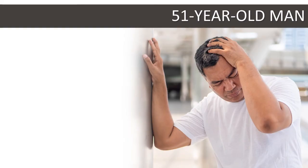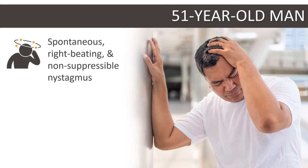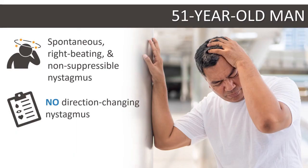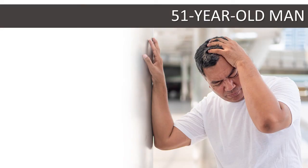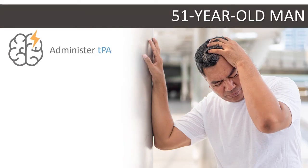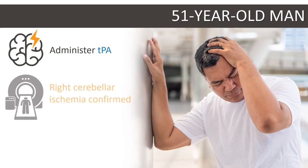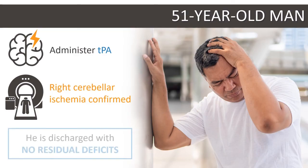Now let's reassess our patient. He has an acute vestibular syndrome with spontaneous right-beating and non-suppressible nystagmus. HINTS examination shows no direction change in the nystagmus, a normal head impulse test, and no skew deviation. Due to concern for stroke given the normal head impulse test, TPA is administered. Right cerebellar ischemia is confirmed by DWI MRI 24 hours later. He is discharged on hospital day 3 with no residual deficits.